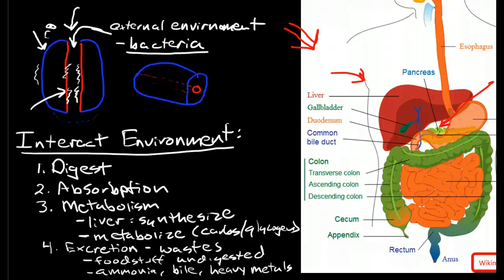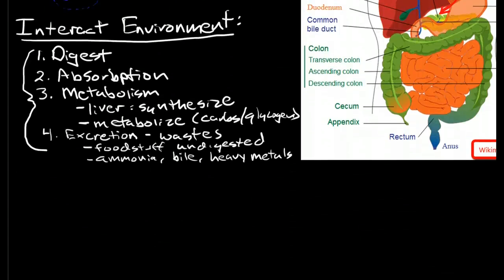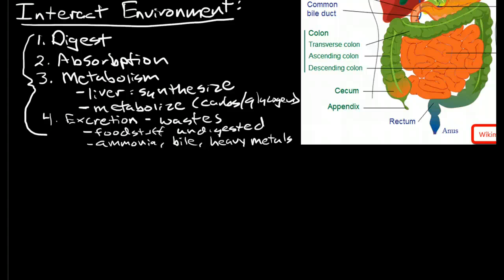So, these are the major functions and how the GI tract is interacting with the external environment to support the organism. And some other functions that it performs in order to perform these functions is secretion.